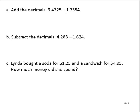So 3.4725 plus 1.7354, I will line up the decimals. So 3.4725, 1.7354. I'm adding, and I just go column by column. 5 plus 4 is 9. 2 plus 5 is 7. 7 plus 3 is 10. I bring 0, carry the 1.